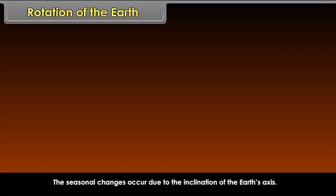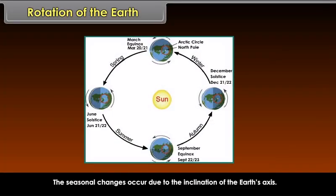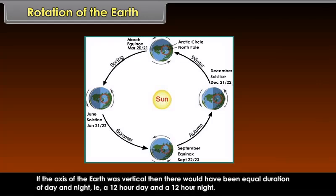The seasonal changes occur due to the inclination of the earth's axis. If the axis of the earth was vertical, then there would have been equal duration of day and night. That is, a 12-hour day and a 12-hour night.